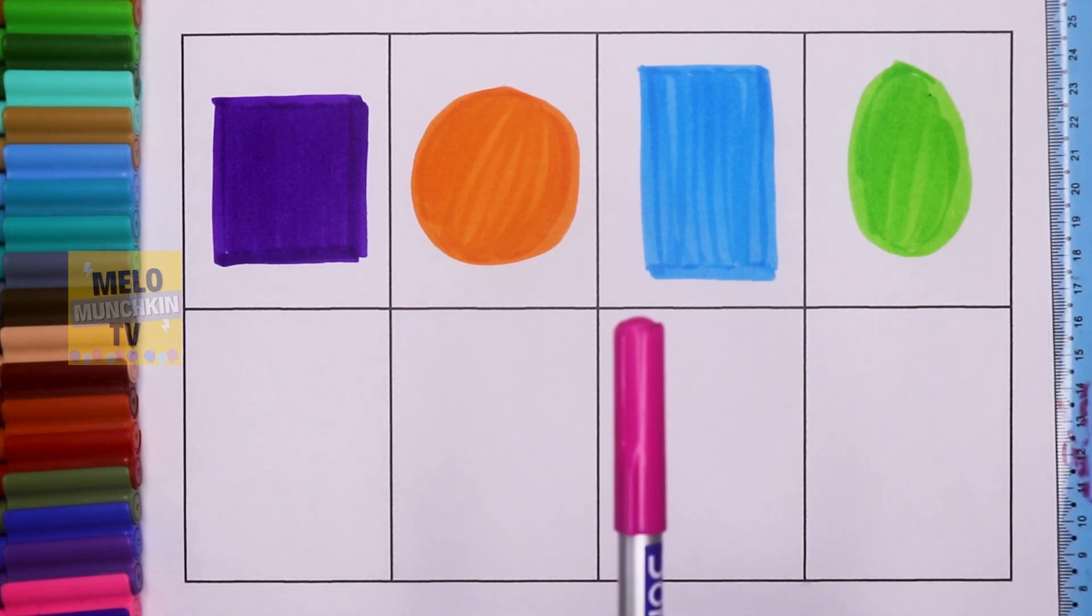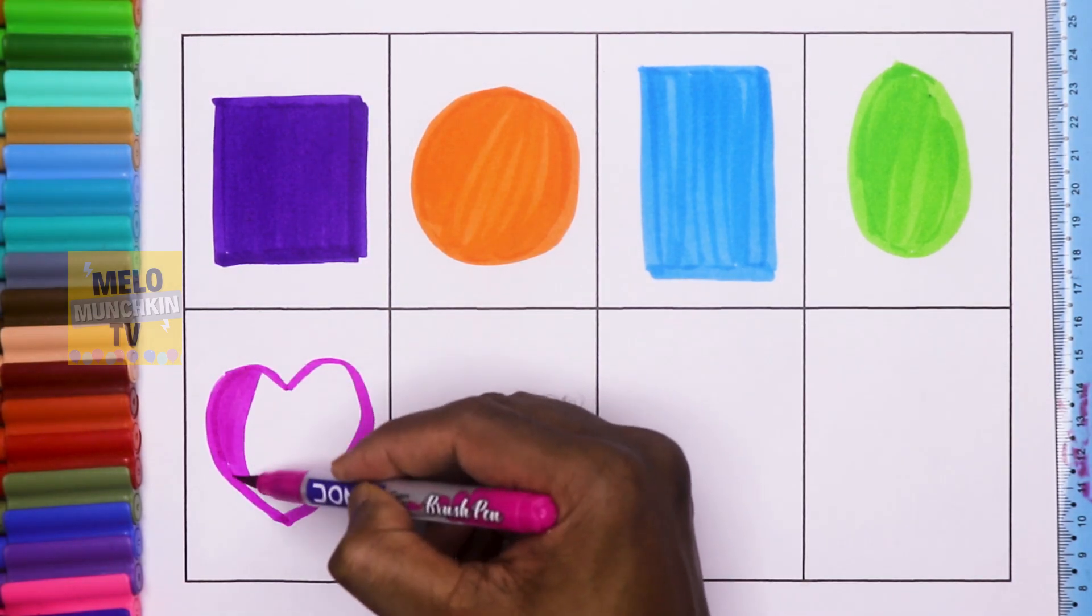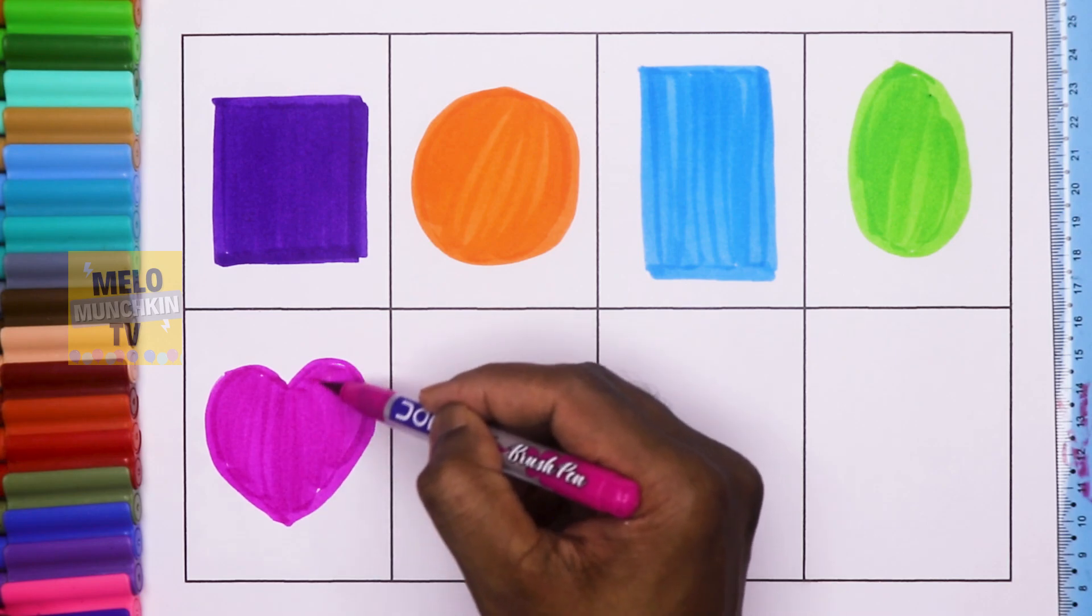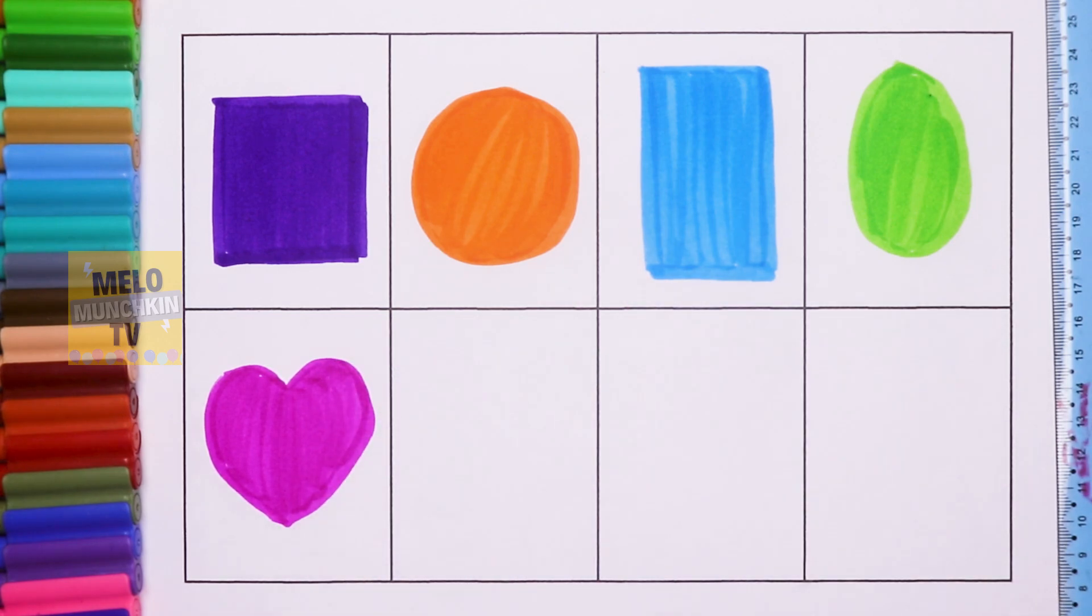Next I'll take pink color to draw a heart. So this is heart. Next I'll take yellow color to draw a triangle.